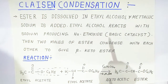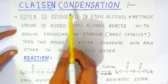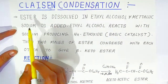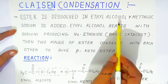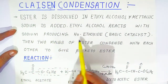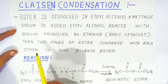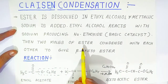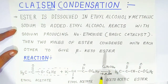Hello students, welcome to Bholanatha Academy. Today we are going to see the second type of condensation reaction called Claisen condensation. In this reaction, ester is dissolved in ethyl alcohol, metallic sodium is added, and ethyl alcohol reacts with sodium to produce sodium ethoxide — a strong basic catalyst. Then two molecules of esters condense with each other to give a beta-keto ester.